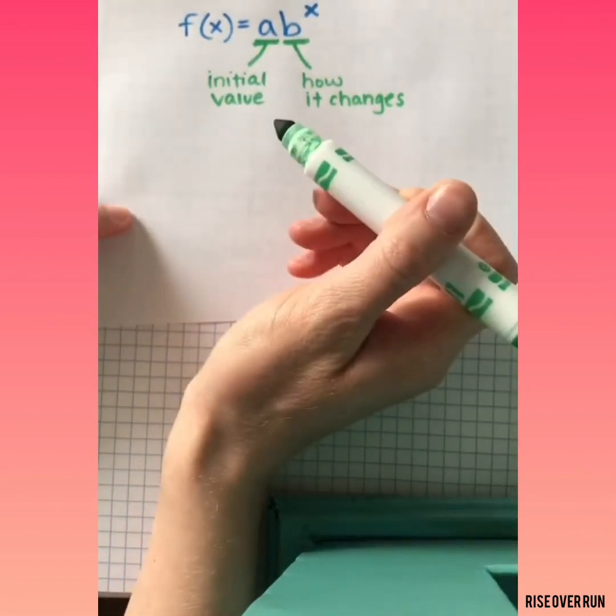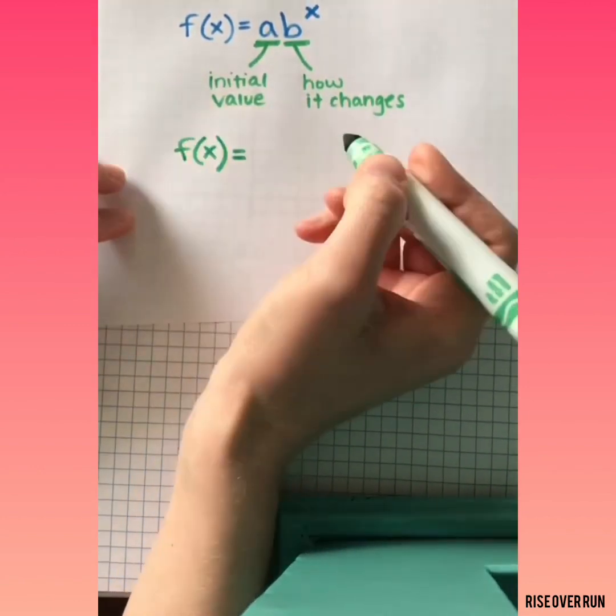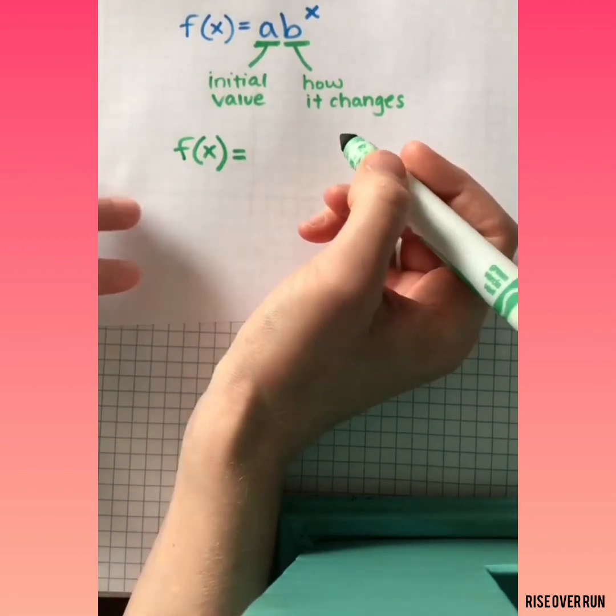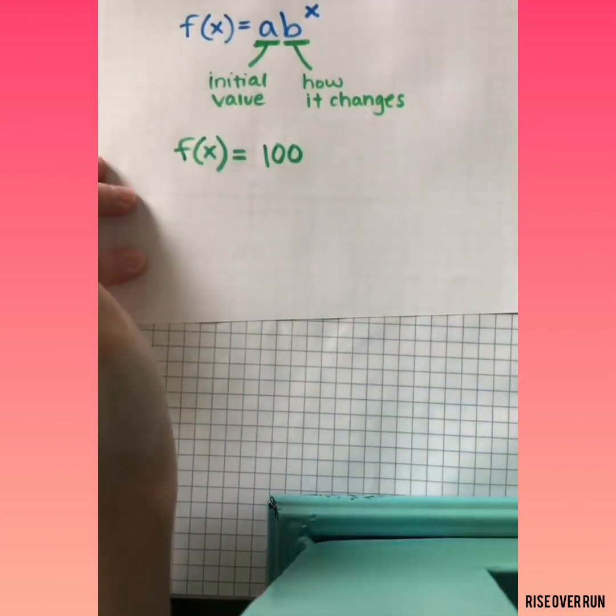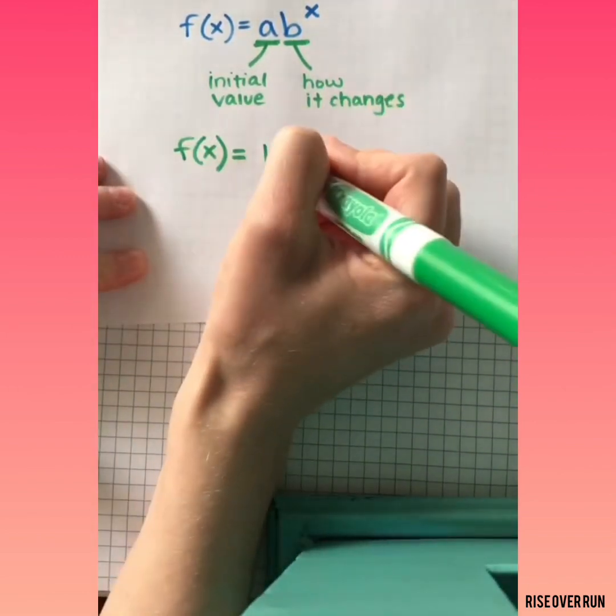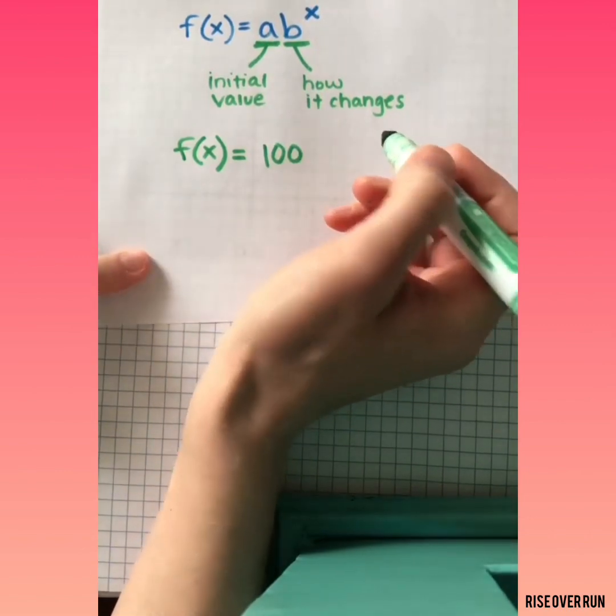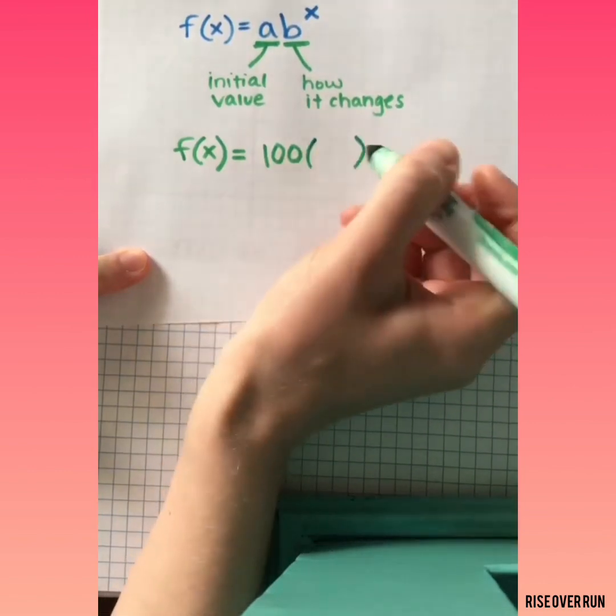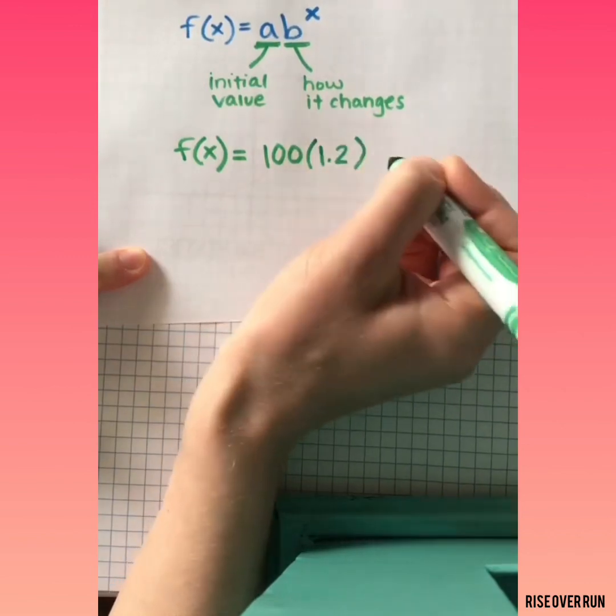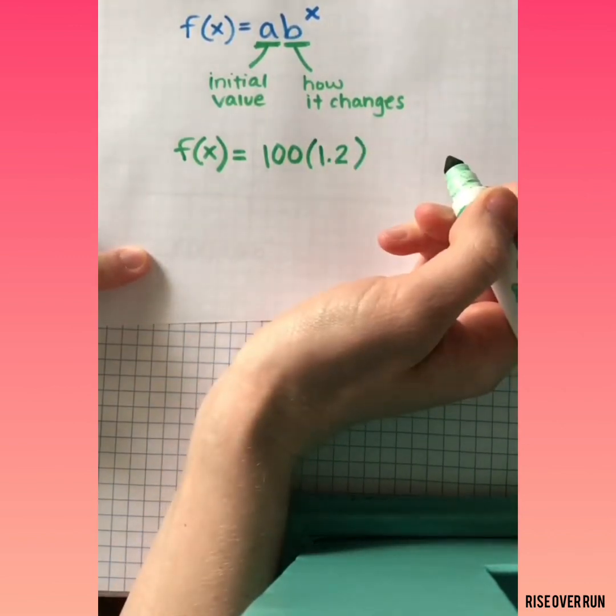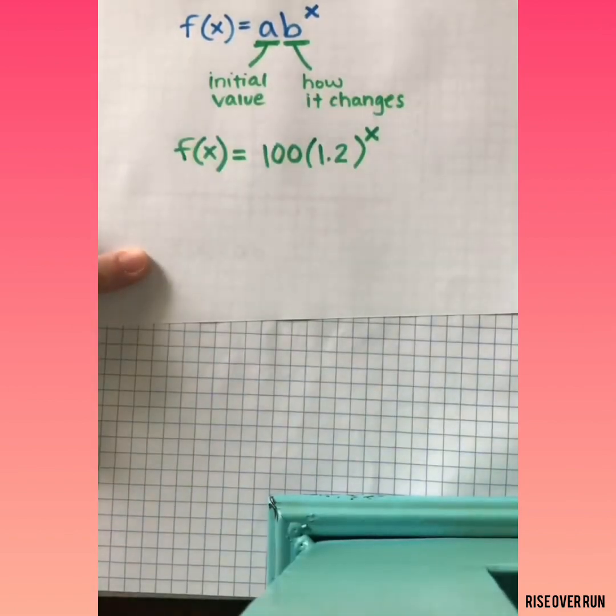So let's write an example. What if you invest an amount of money? Let's say you want to start out by investing $100, and you've been told that this investment will increase 20% every year. We'd want to multiply that to show an increase of 20%, so we'd multiply it by 1.20 or 1.2, and it's every year, so it has an exponent of x.